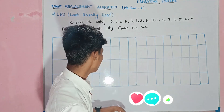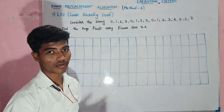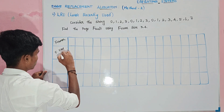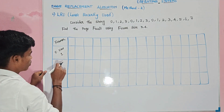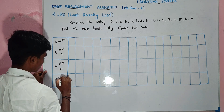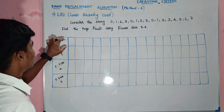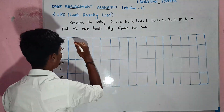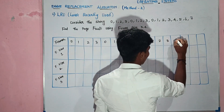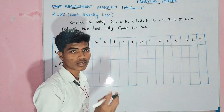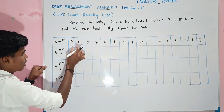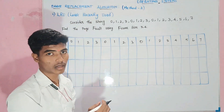How do we find out? First we will find the page frame size 3 and 4. Now we will find frame size 1: 0 1 2 3 and 1 2 3. Then frame size 2 and frame size 3. We will find the next string.